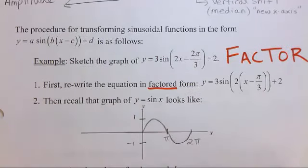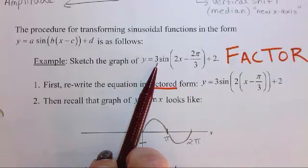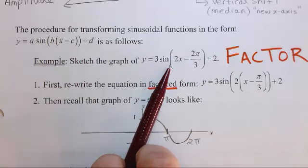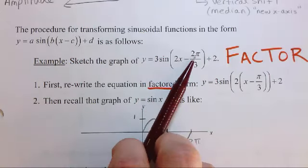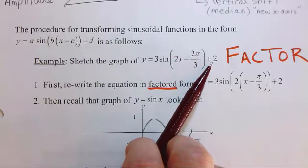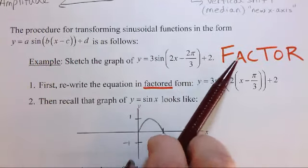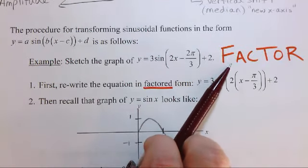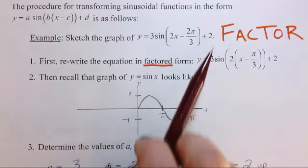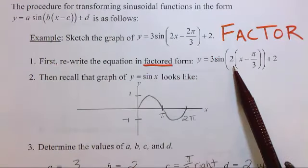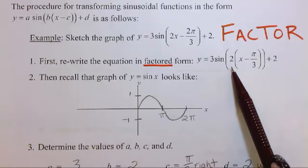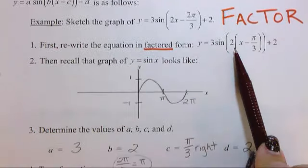So this is the first example we're going to look at. We're going to look at y equals 3 times sine and then bracket 2x minus 2π by 3 plus 2. Now, you cannot do the transformations when it looks like this. You must factor, factor, factor. Okay, so here's the equation written in factored form. We've factored the two out so we can more clearly see what is what.